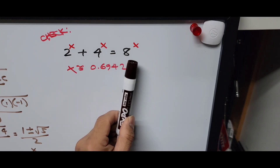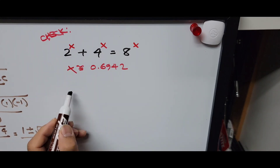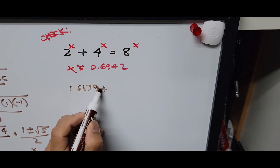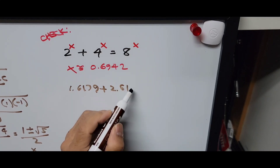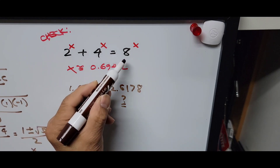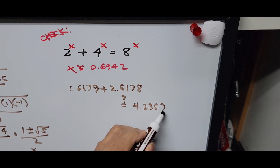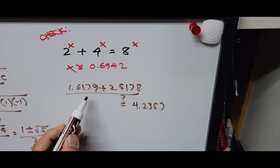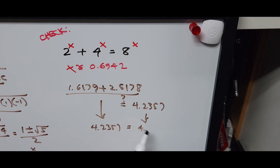Now checking: substituting x ≈ 0.6942 into the original equation 2^x + 4^x = 8^x. The first term 2^x equals approximately 1.6179. The second term 4^x equals approximately 2.6178. And 8^x on the right-hand side equals approximately 4.2357. Adding the left side: 1.6179 plus 2.6178 equals 4.2357, which equals 4.2357 on the right side. This confirms our value of x is correct.